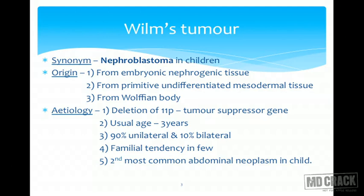The usual age of the child at presentation is 3 years. 90% of these tumors are solitary and unilateral in nature, but in 10% there can be a bilateral presentation. This tumor can show familial tendency in a few cases, and it is the second most common abdominal neoplasm in children.